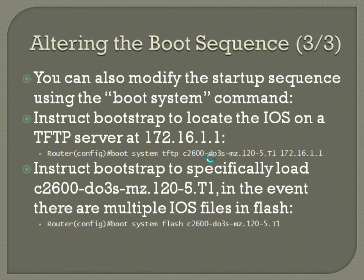You can also modify the startup sequence using the boot system command, which instructs bootstrap to locate the IOS. The boot system command gives you more granularity in how you want it to boot up. For example, if you wanted to instruct the bootstrap to locate the IOS on a TFTP server at 172.16.1.1, the command would be — from global configuration mode — 'boot system tftp,' then the name of the IOS file (in this case C2600-DO3-SMZ, etc.), then the IP address of the TFTP server, 172.16.1.1.